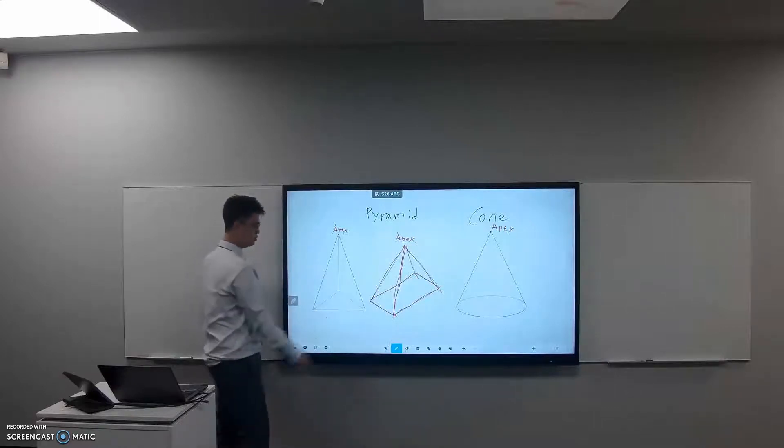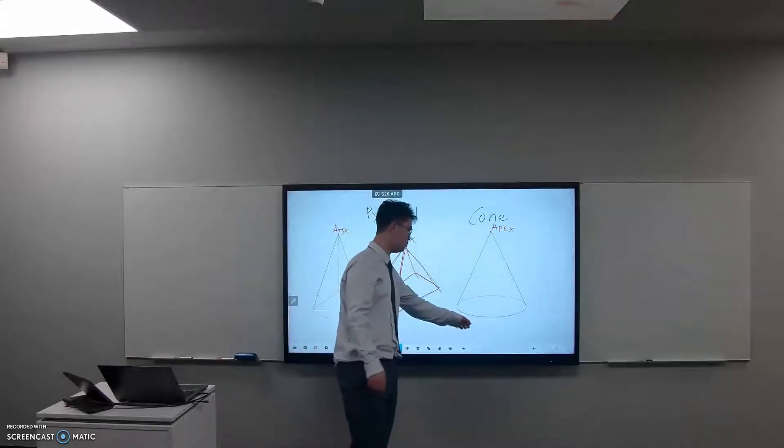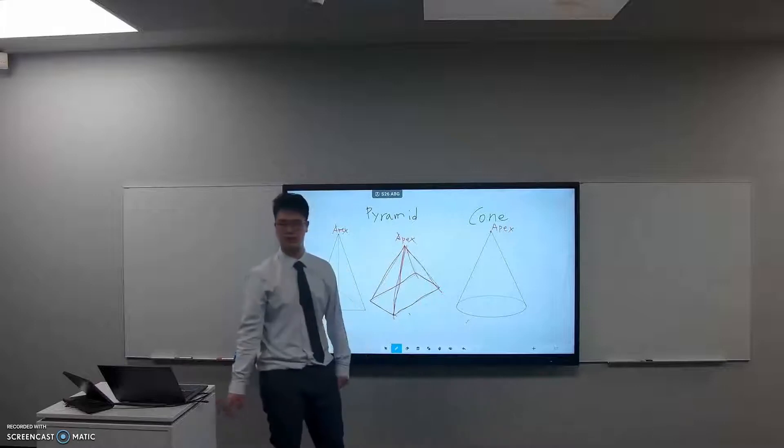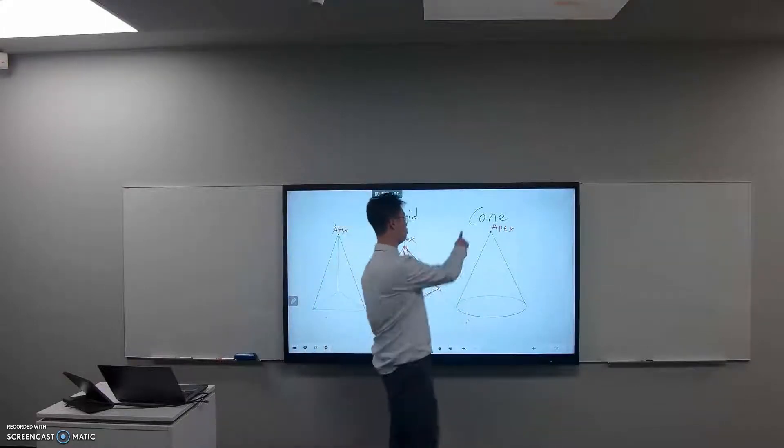This is a pyramid. This is a pyramid. But what about this one? This is a pyramid. Well, it is a special type of pyramid, it's called a cone.